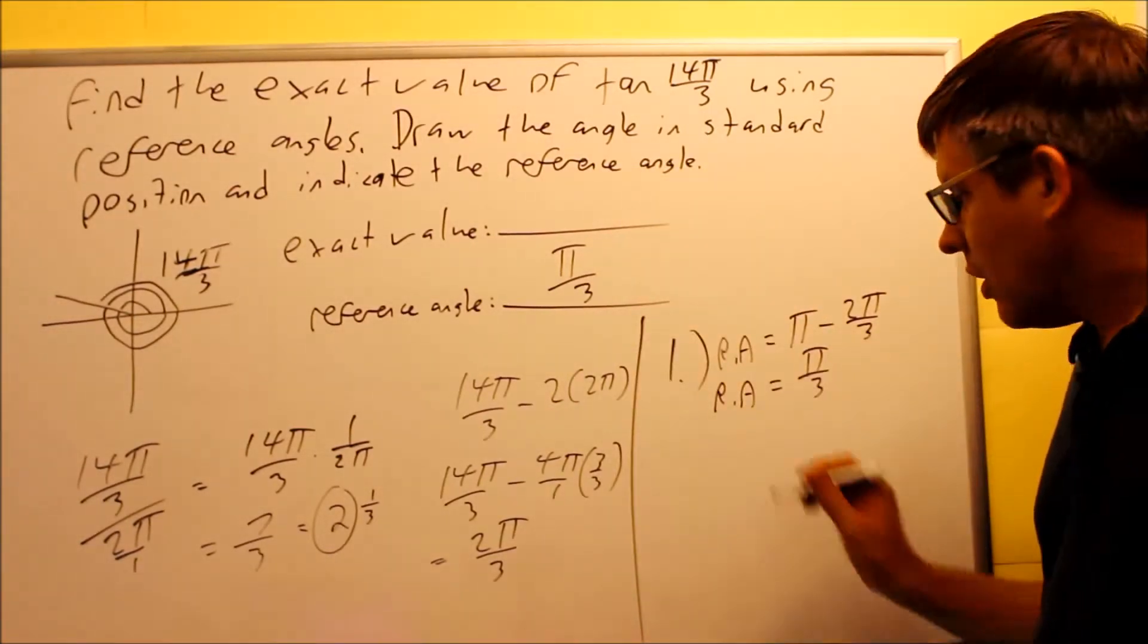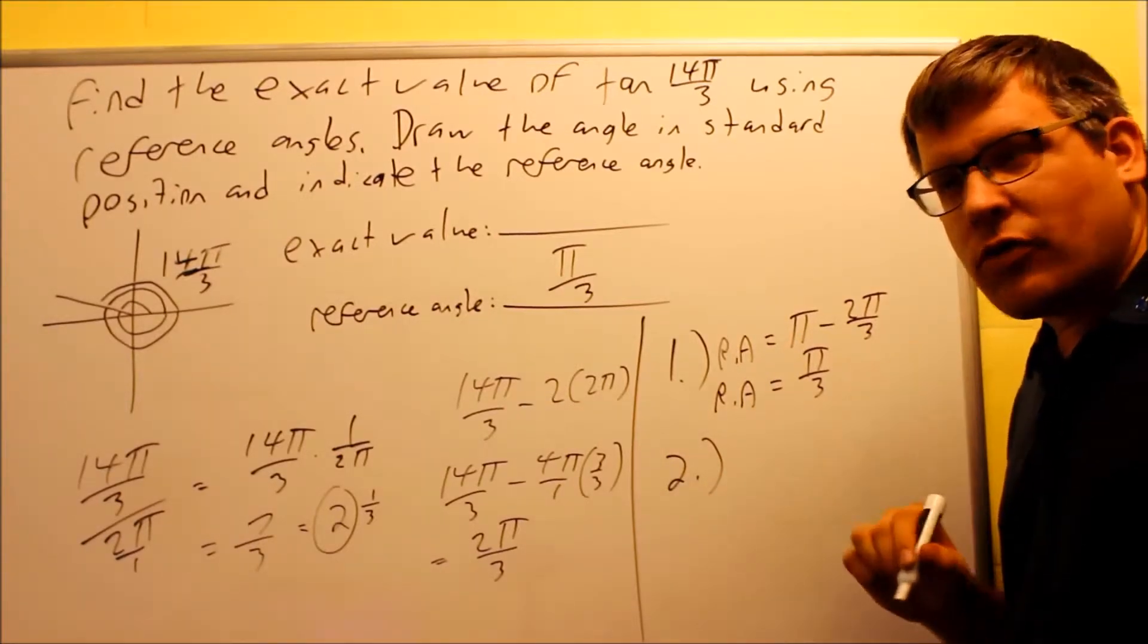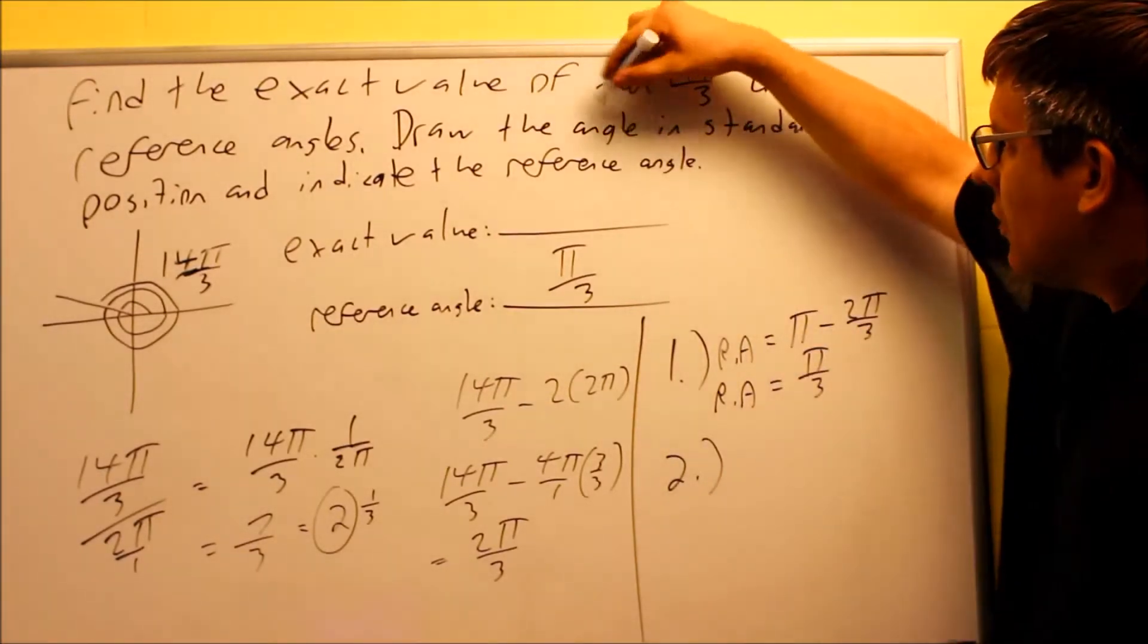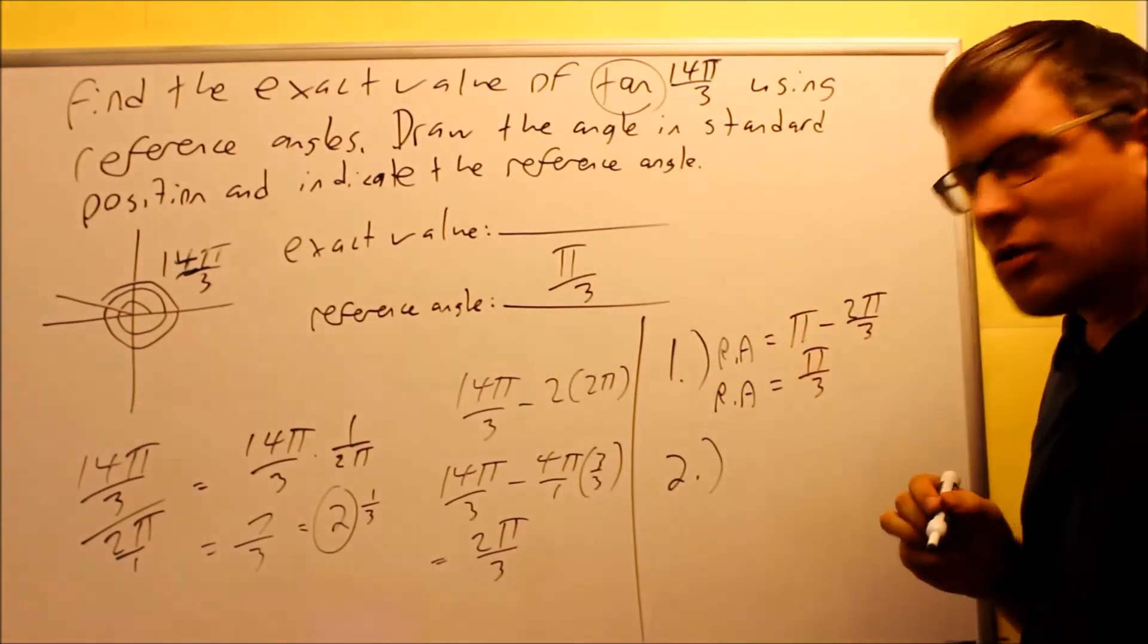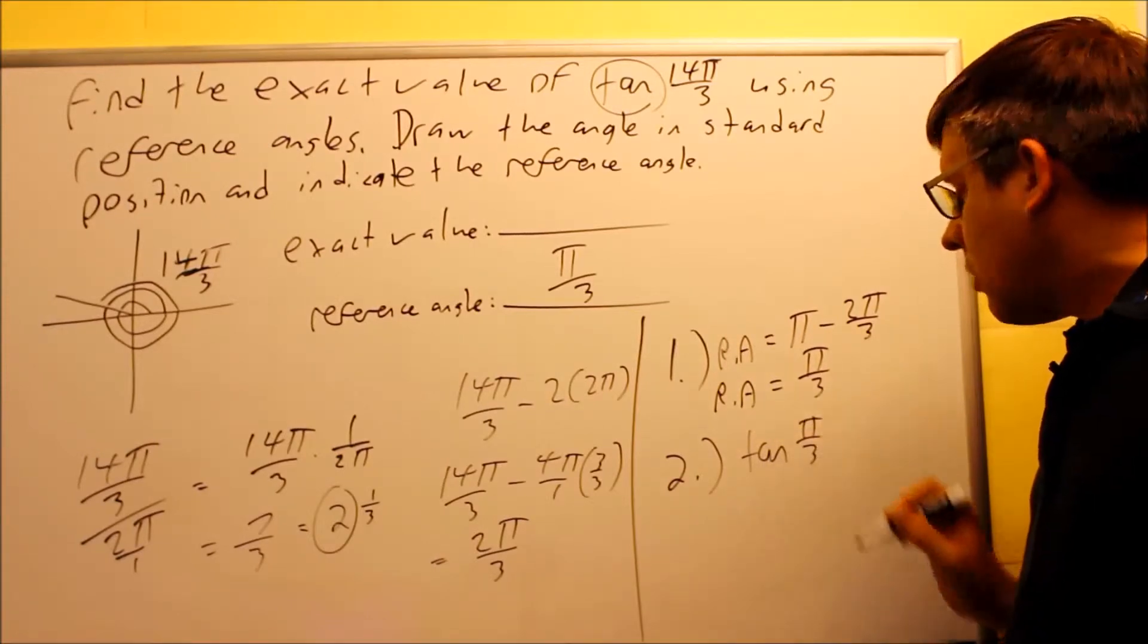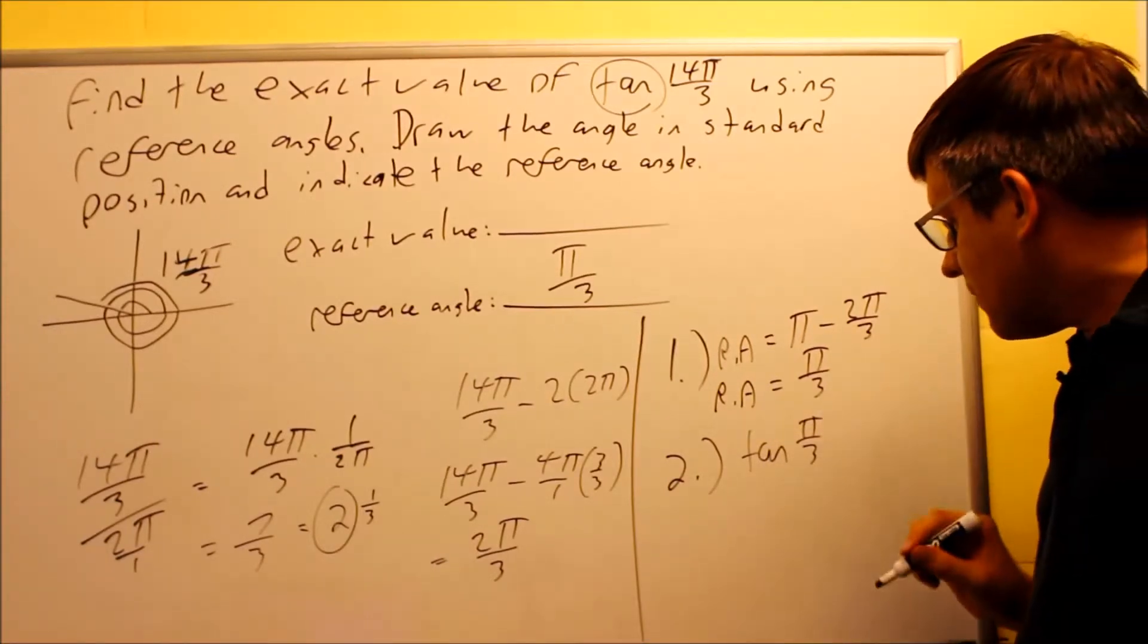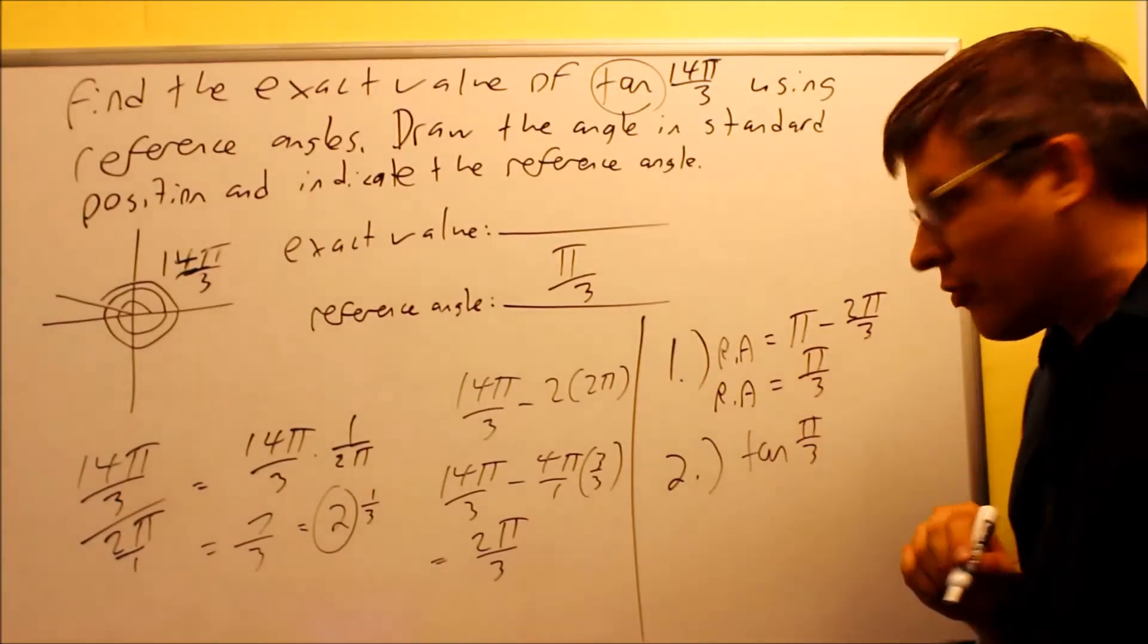Reference angle, π over 3. Step number two, I want to apply the trig function to the reference angle. The trig function is this one given in the original problem. The original problem has tangent in there. So I need to apply tangent to my reference angle. So I want to find tangent of π over 3. I can look at the table for that π over 3.